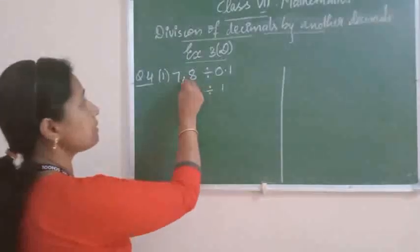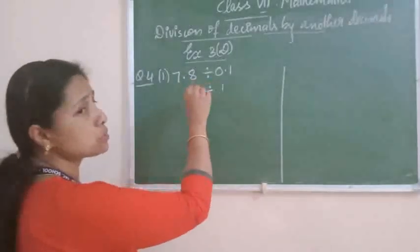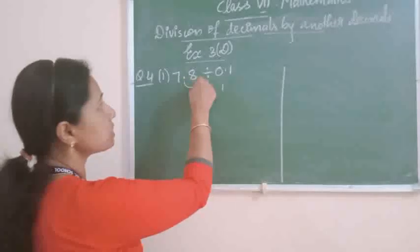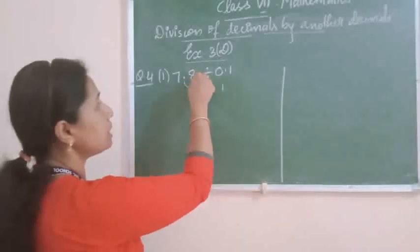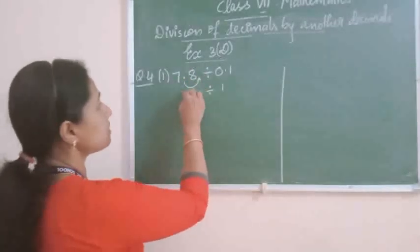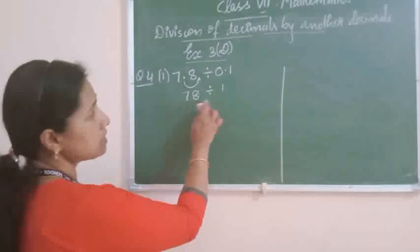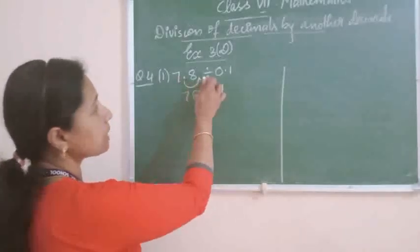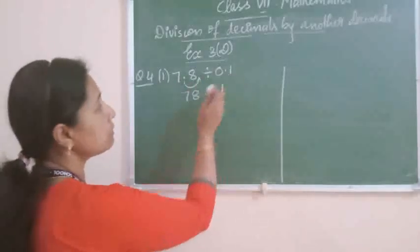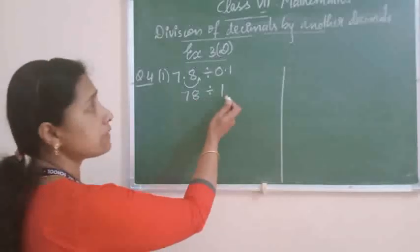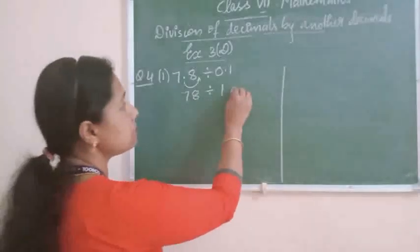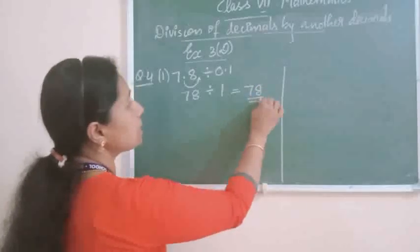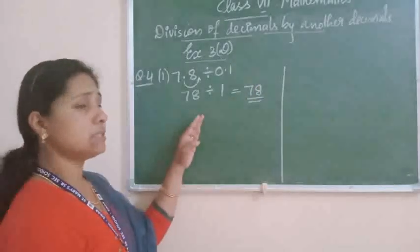And now the same way, 7.8 also should be changed. We shift this point to the right side by one place. This number becomes 78. Now it is 78 divided by 1. So 7.8 divided by 0.1 becomes 78 divided by 1, which is equal to 78. This is the direct method of doing division.